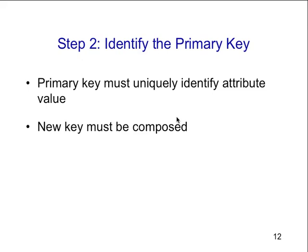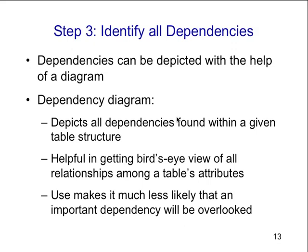The primary key must be a uniquely identified attribute value, and a new key must be composed if no key exists. Normalization is all about identifying dependencies on the data and reducing partial dependencies — making full dependencies and getting rid of transitive dependencies that mess up the integrity of the data. If you have an entity relationship diagram created for your database design, you'll actually automatically create third normal form databases — you don't have to go through this process manually.